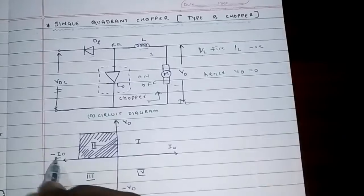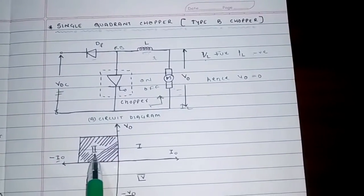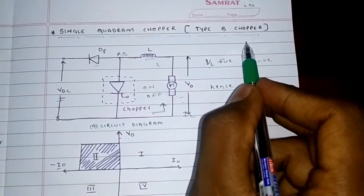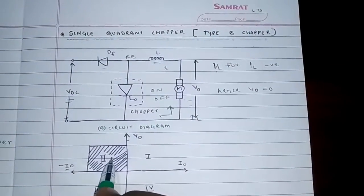Here, the second quadrant operation is possible. For this reason, the Type B chopper is also called second quadrant chopper.